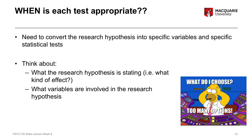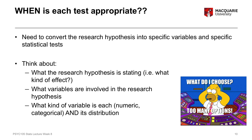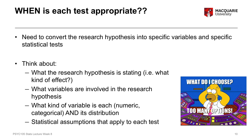You also want to think about what variables are involved in the research hypothesis — what the actual variables are that you're going to be analyzing. You need to think about what kind of variables they are: is it a numeric variable, is it a categorical variable, and what the distribution of that variable is. You also need to think about what statistical assumptions are appropriate for each of the different tests.